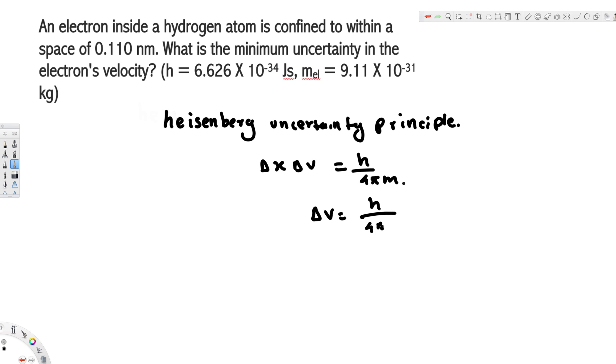h is Planck's constant, provided right here: 6.626 × 10⁻³⁴, divided by 4π. m is the mass of the electron: 9.11 × 10⁻³¹.